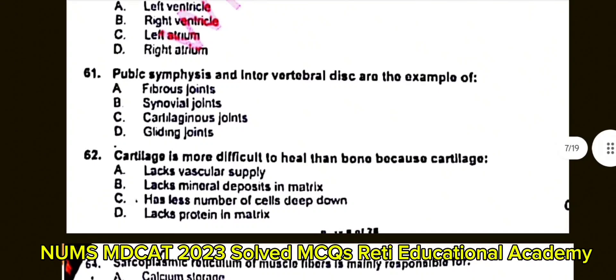Question number 62: Cartilage is more difficult to heal than bone because cartilage? A. Lacks vascular supply. B. Lacks mineral deposits in matrix. C. Has fewer cells deep down. D. Lacks protein in matrix. The correct answer is A: Lacks vascular supply.